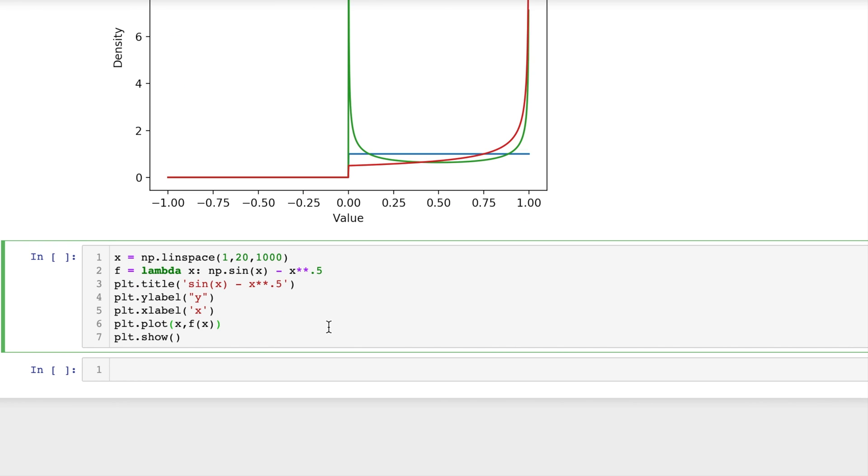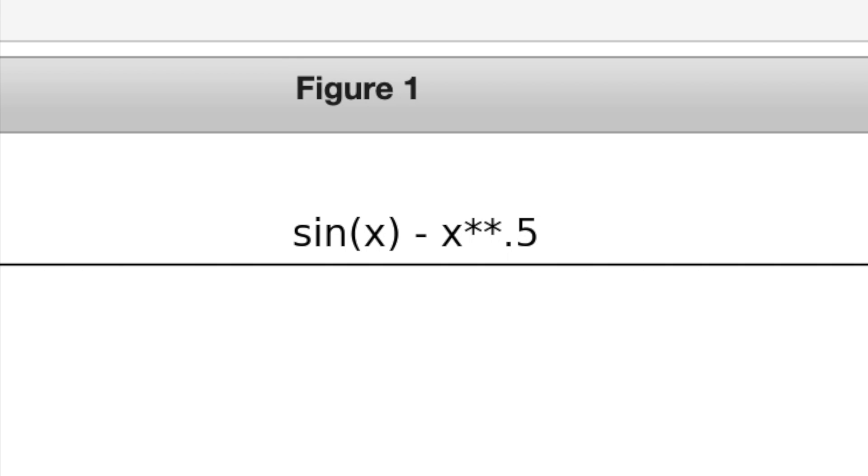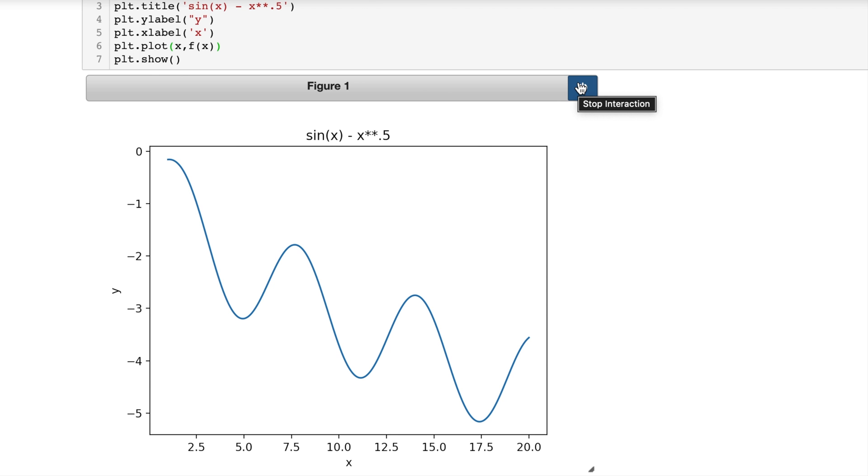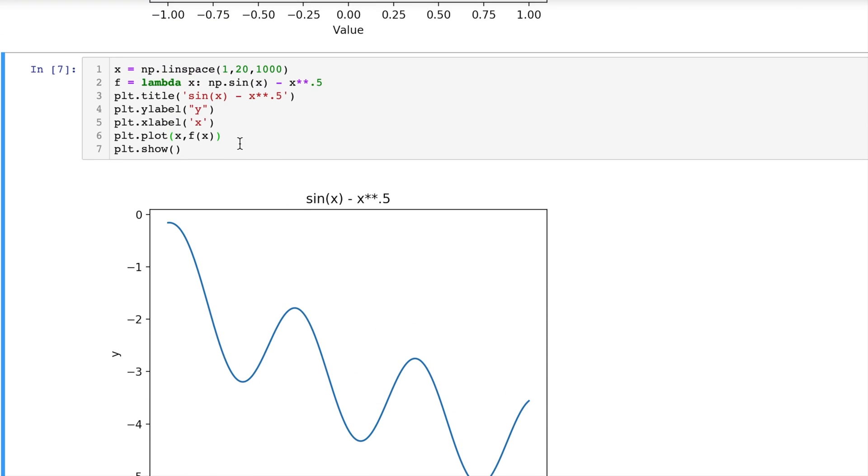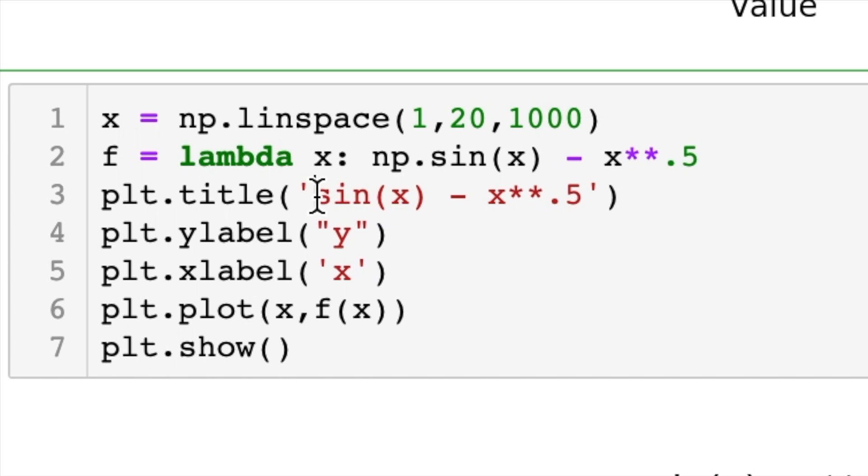Okay for this last example it's sine of X minus X to the power of 0.5 which of course is the same as the square root of X. So let's change this title.